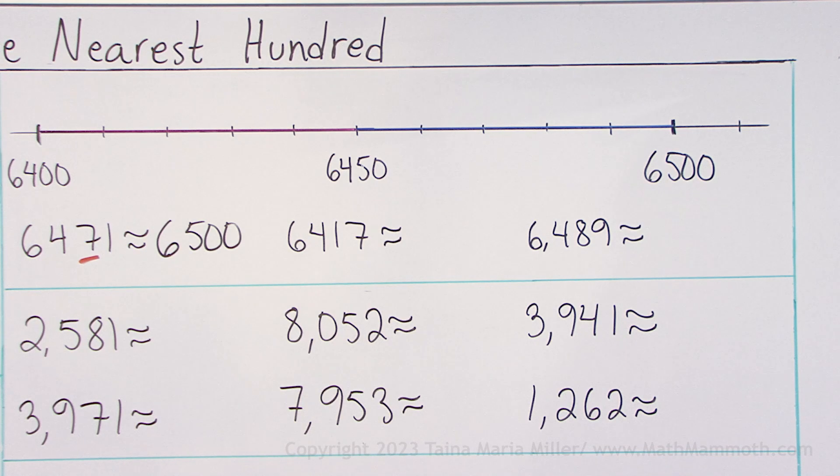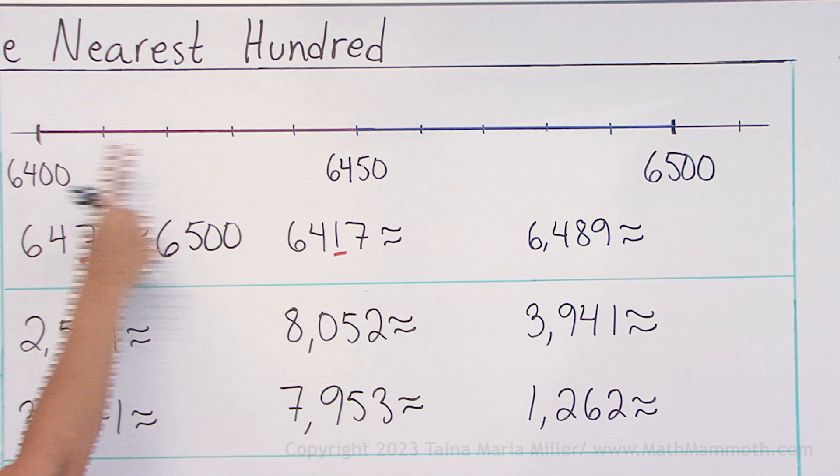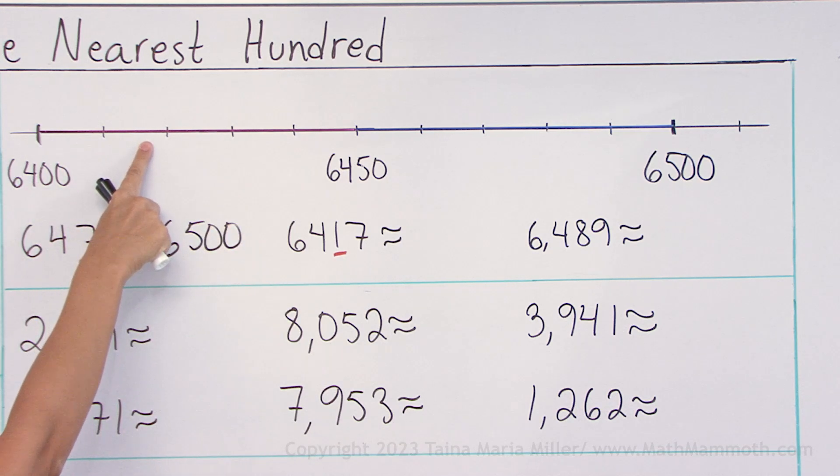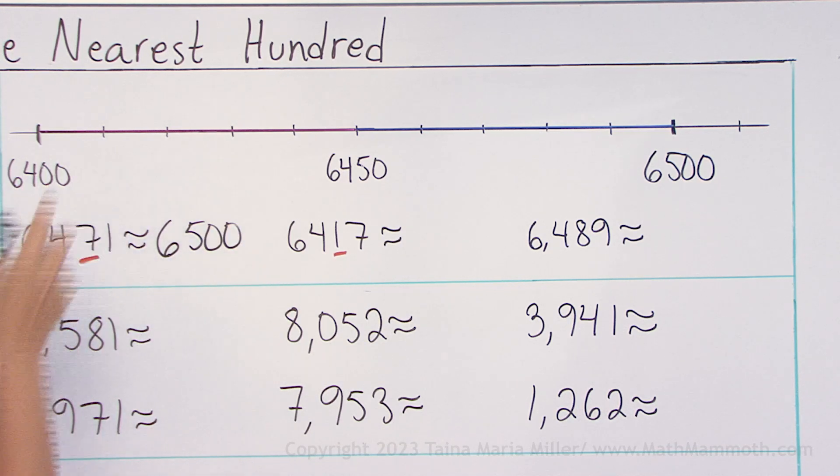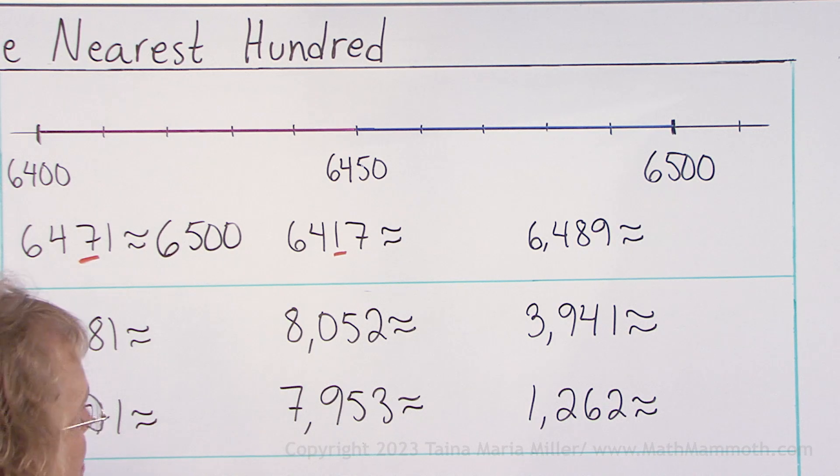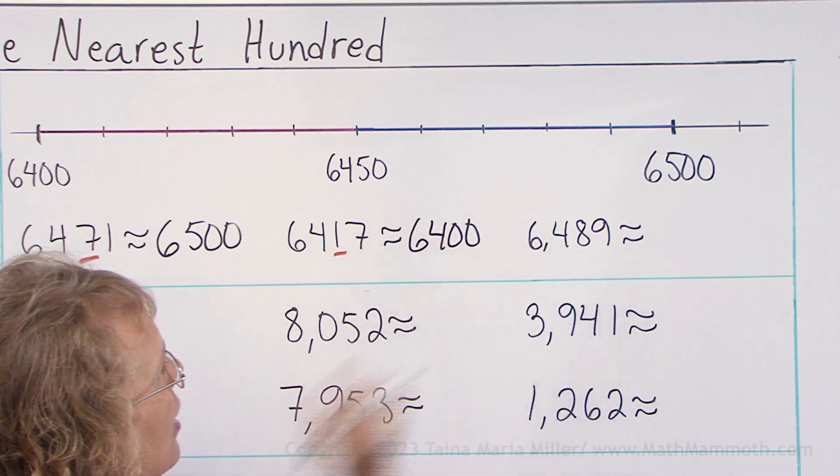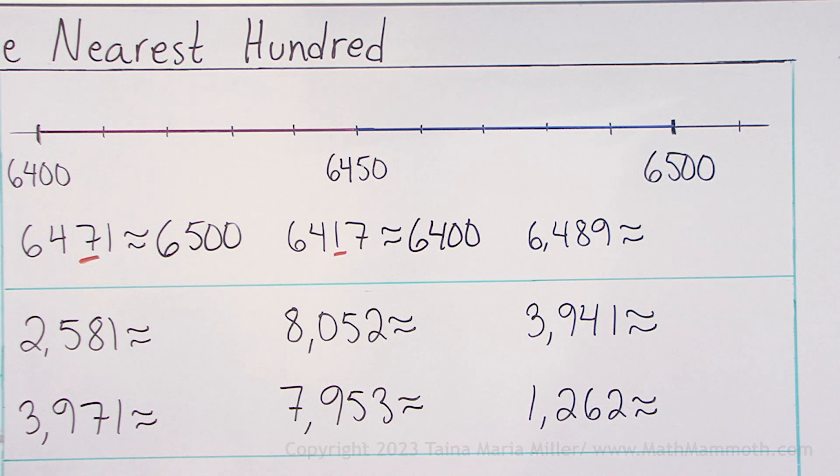6417. Again, you look at the tens digit, or over here on the number line it is somewhere there. Here's 6410. So round down. And this one, round up.